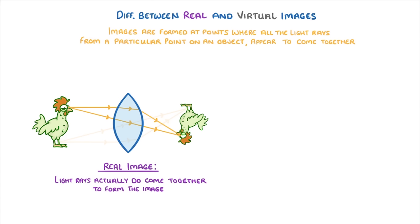For example, these light rays from the chicken's head pass through the lens and converge in the bottom right, which is why we see the chicken's head down at the bottom. Meanwhile, the light rays from the feet converge in the top right, and so we see the feet at the top.